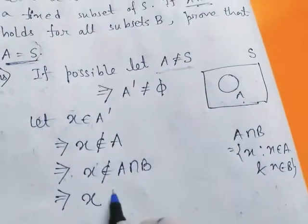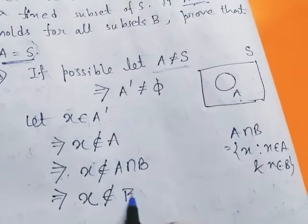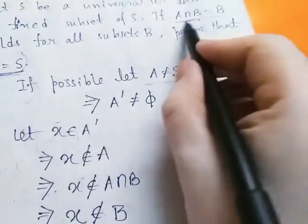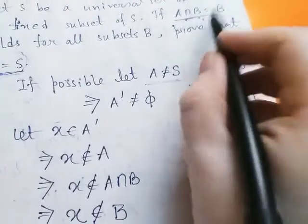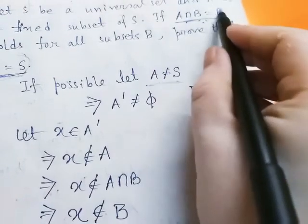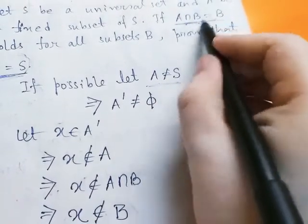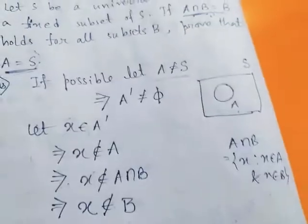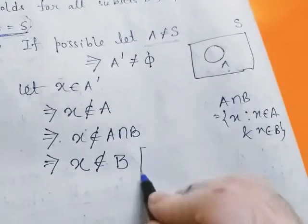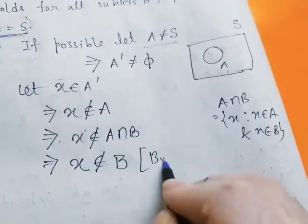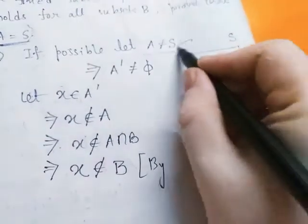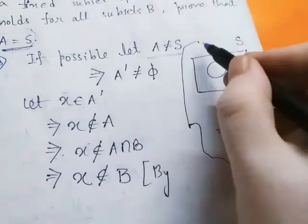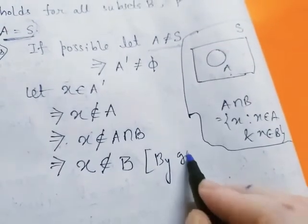Since A intersection B equals B, if two sets are equal they contain the same elements. So x does not belong to A intersection B implies x does not belong to B, by the given condition.